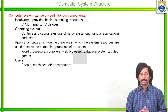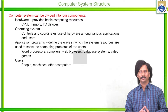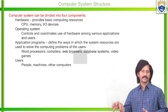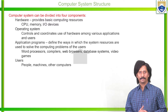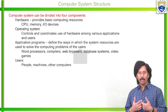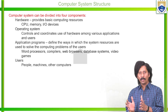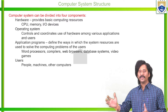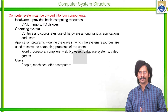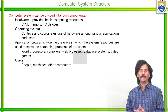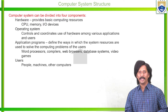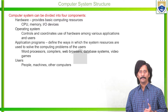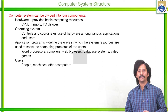Now, how is a computer system organized? Whatever the components we are using, with the help of those components each and every user may execute some applications. For execution of our programs or applications, the operating system provides an environment — this is described as the computer system structure. Each and every computer system can be divided into basically four components: hardware, operating system, application programs, and users.